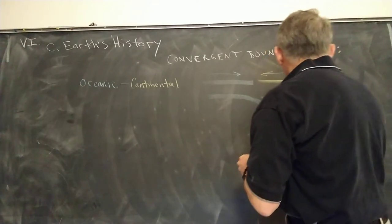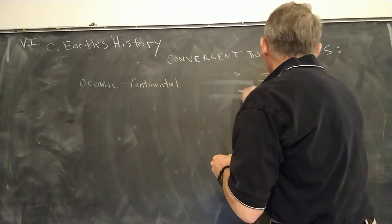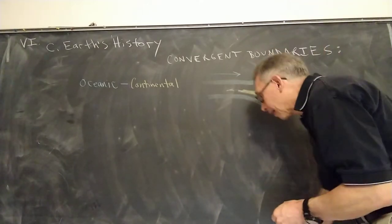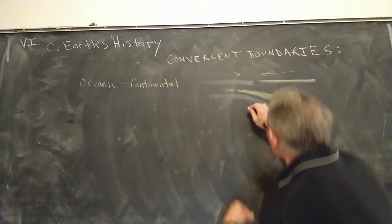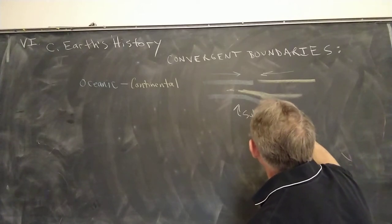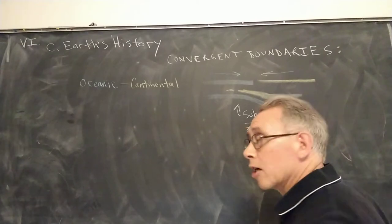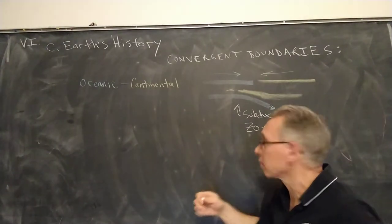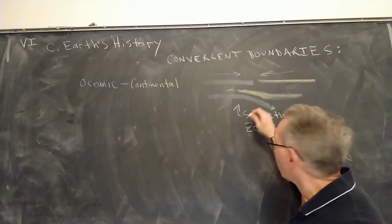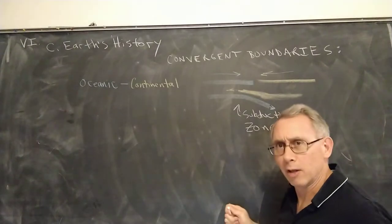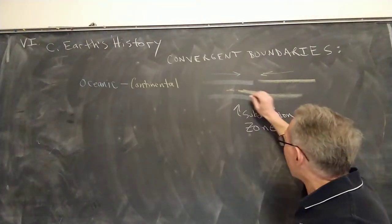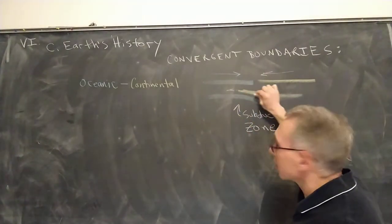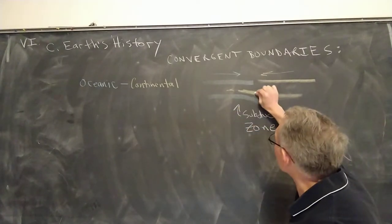The continental crust ends up going up above the oceanic crust, and what happens is you get the oceanic crust subducting — subducting means to go underneath — giving you what is called a subduction zone. In a subduction zone, one of the plates is subducting. If it goes down into the asthenosphere it's very hot, so it gets melted. That causes melting, changing pressures and temperatures, and the rock is grinding past the other rock, so you end up getting fissures and breaks.